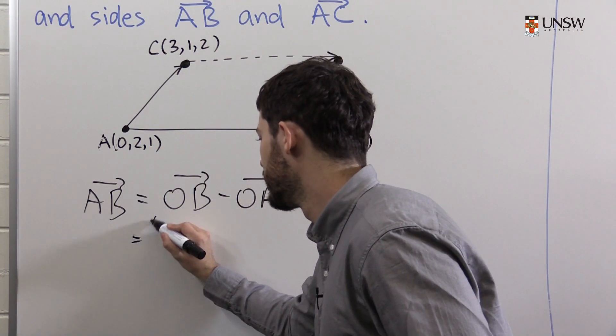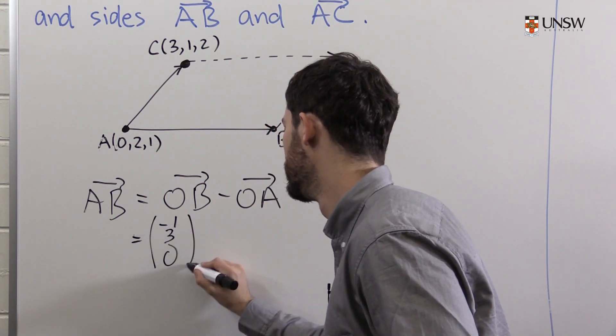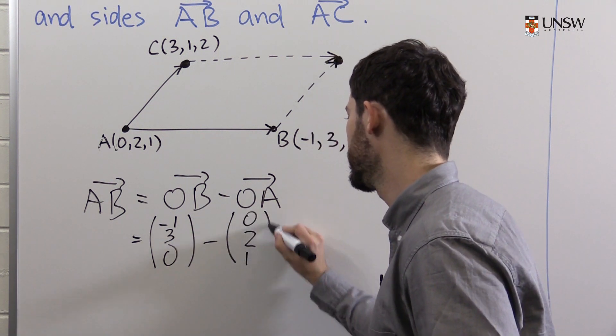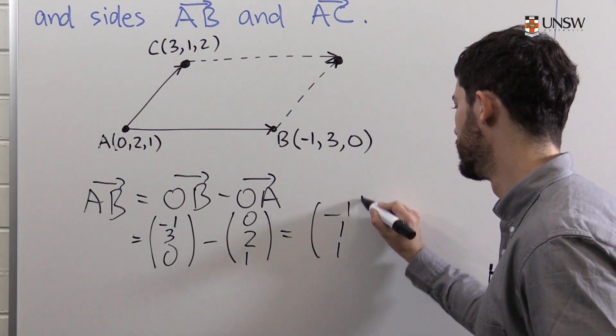All we need to do is just write the coordinates of B as a column. So it becomes (-1, 3, 0) minus OA, which is (0, 2, 1). And we get (-1, 1, -1).